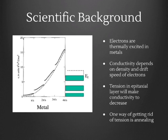If metal layers are grown epitaxially, tension inside layers will make electrons difficult to move. And as a result, conductivity to decrease. A good way of getting rid of tension is annealing. Yet the disadvantage is quite obvious. Metals tend to oxidize.